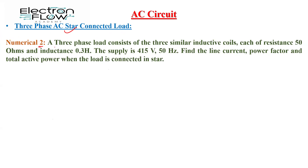The question given to us is that a 3-phase load consists of 3 similar inductive coils, each with a resistance of 50 ohms and inductance of 0.3 Henry. The 3-phase supply is 415 volts, 50 hertz. We need to calculate the line current, power factor, and total active power when the load is connected in star.